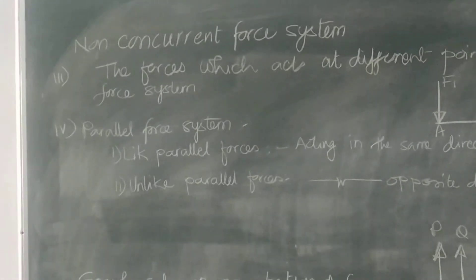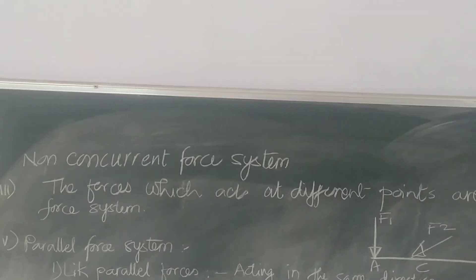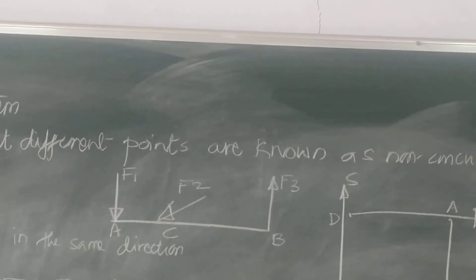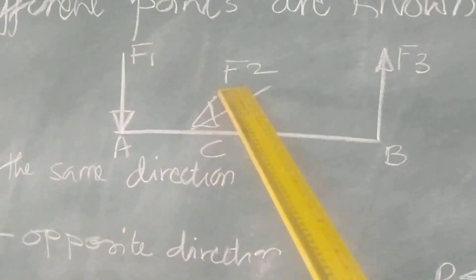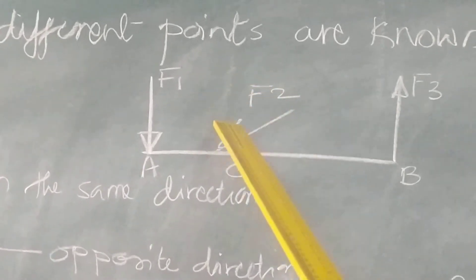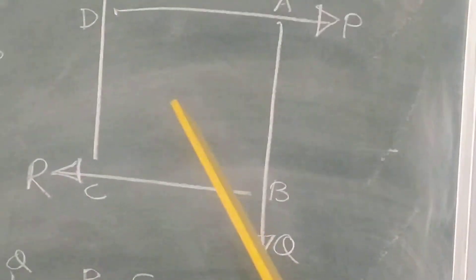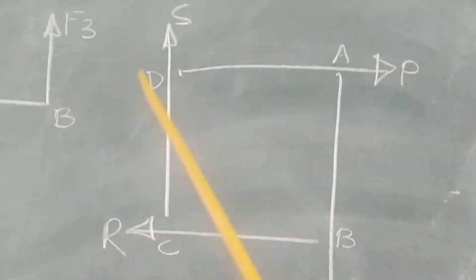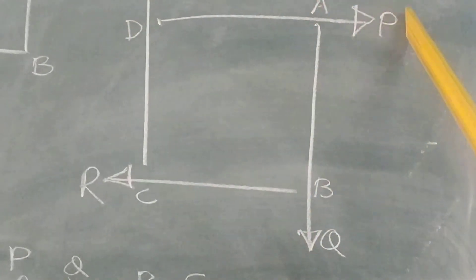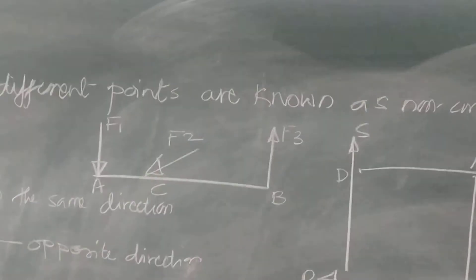The next one is non-concurrent force system. Forces which act at different points are known as non-concurrent force system. For example, on a column or rod, the different forces F1, F2, and F3 are acting at different points A, B, and C — F1 is acting on A, F2 at C, and F3 away from B. Similarly, forces P, Q, R, and S are acting at different points, so this is a force system which acts at different points, known as non-concurrent force system.